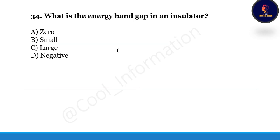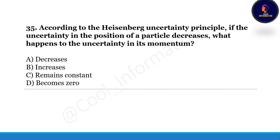Next question: what is the energy band gap in an insulator — zero, small, large, or negative? This is a very important and frequently asked question. Correct option is C, large. And the last question of this video: according to the Heisenberg uncertainty principle, if the uncertainty in the position of a particle decreases, what happens to the uncertainty in its momentum — it decreases, increases, remains constant, or becomes zero? Correct option is B, it will increase.